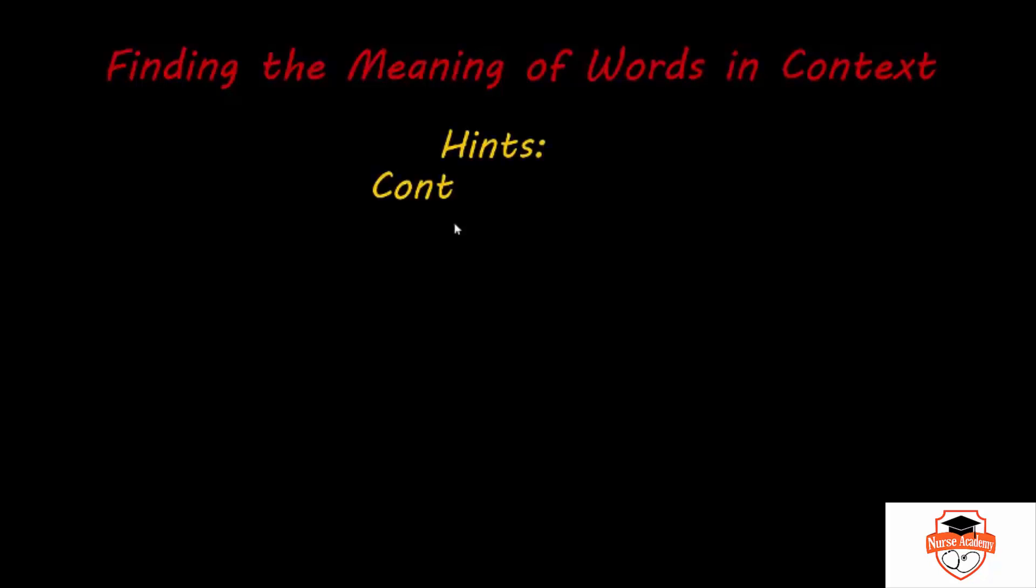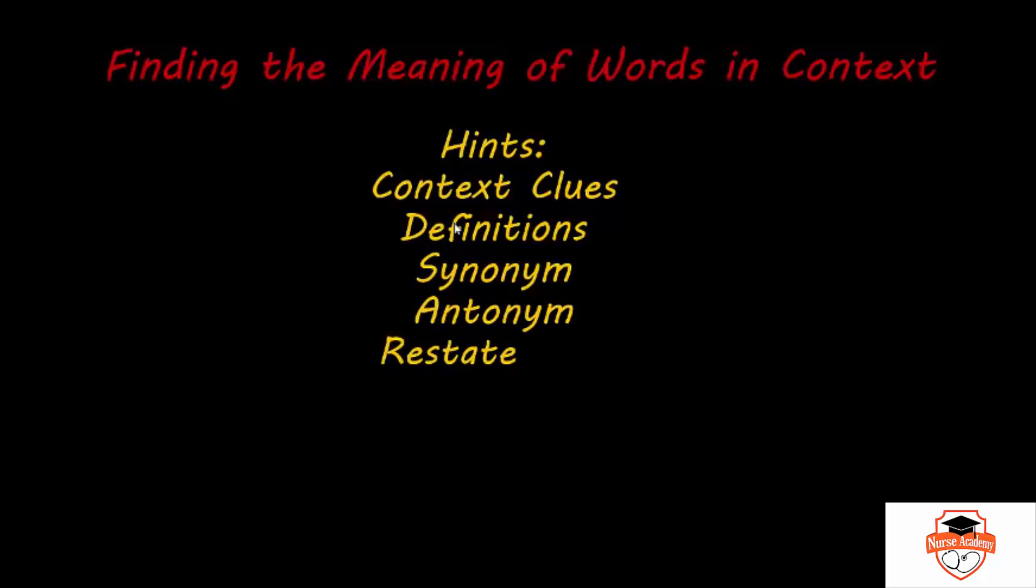Now let's go over finding the meaning of words that you may not know in a passage. And the one big thing that you can do is you can look for context clues. Some examples of context clues would be a definition that the author may provide, a synonym or an antonym. So a synonym, something similar, antonym, the opposite of the word you're looking at.